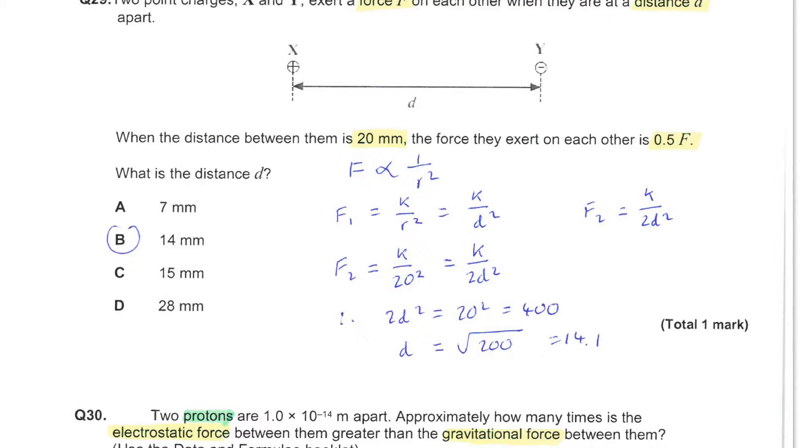This time since the charges do not change, I have chosen just to use the relationship that the force is inversely proportional to the separation squared. This means that the force between the charged particles is equal to a constant divided by the separation squared. If we take the first scenario we could call that force F1, and in that situation the separation is D. So F1 is equal to a constant divided by D squared.